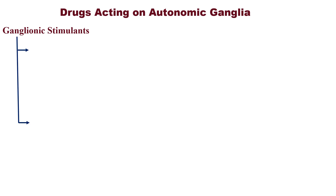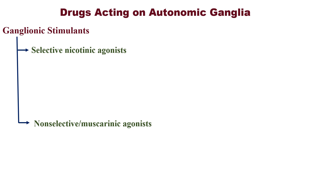Drugs acting on autonomic ganglia. Under ganglionic stimulants, it is further divided into selective nicotinic agonists and non-selective or muscarinic agonists. For the mnemonic, take it as a criminal gang — ganglionic stimulants are the people who will support and stimulate a criminal gang.